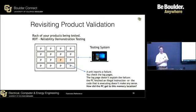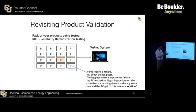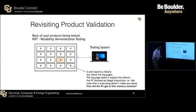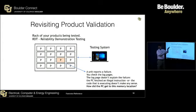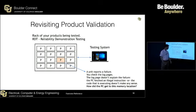But part way through your testing, this particular product right here — bear in mind they're all running the same tests in parallel, pretty much in step. The PC would say start test one, so they're skewed in time just a little bit, but they're close in time. So this unit here reports failure. You check the log pages, and the log page doesn't explain the failure.